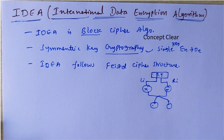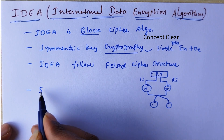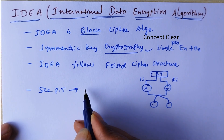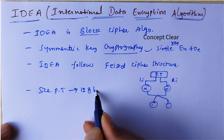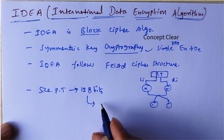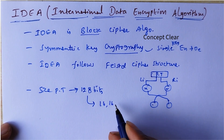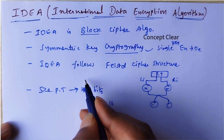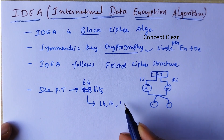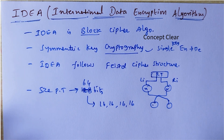The size of the plain text in IDEA is 64 bits. These 64 bits are divided into 4 subparts — 16, 16, 16, 16 — like that, 4 subparts of 16 bits each.